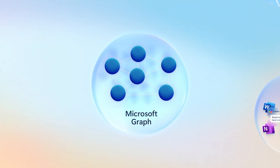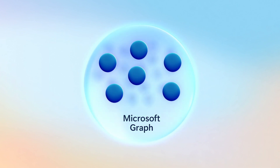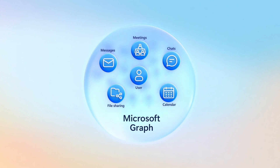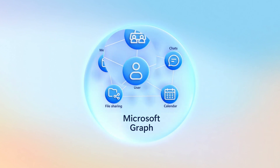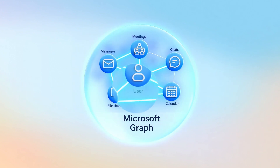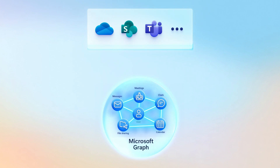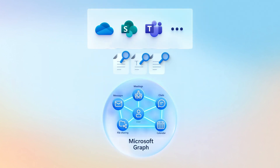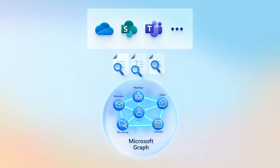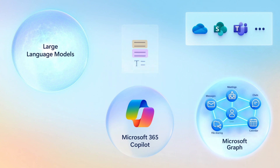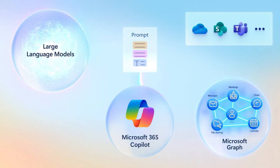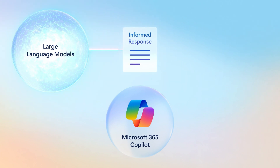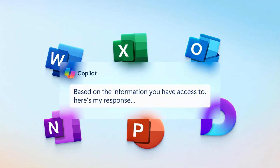The Microsoft Graph has long been foundational to Microsoft 365. It includes information about relationships and activities over your organization's data. It works together with the semantic index for Copilot to help orchestrate information retrieval. Discovered information along with the original user prompt is presented to the large language model to generate an informed response, which is then returned back to the corresponding app.